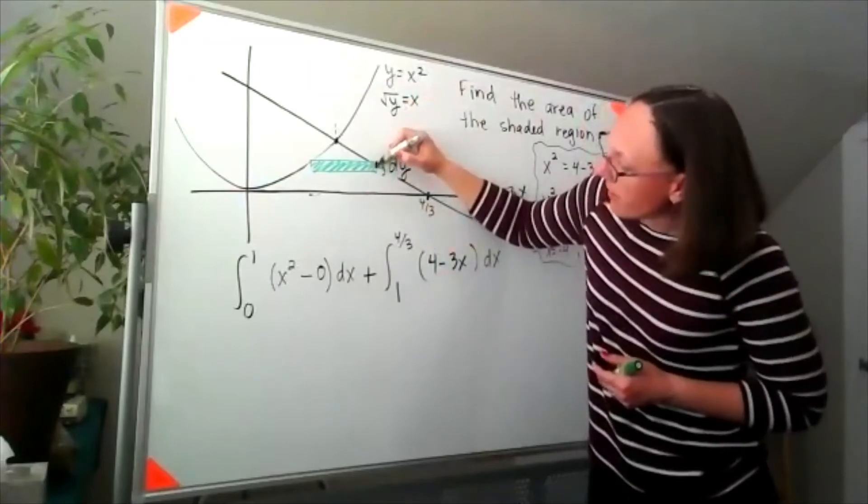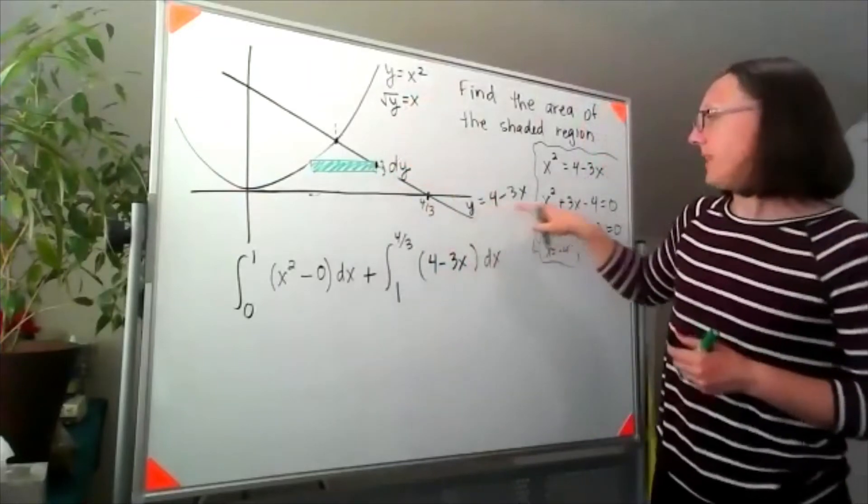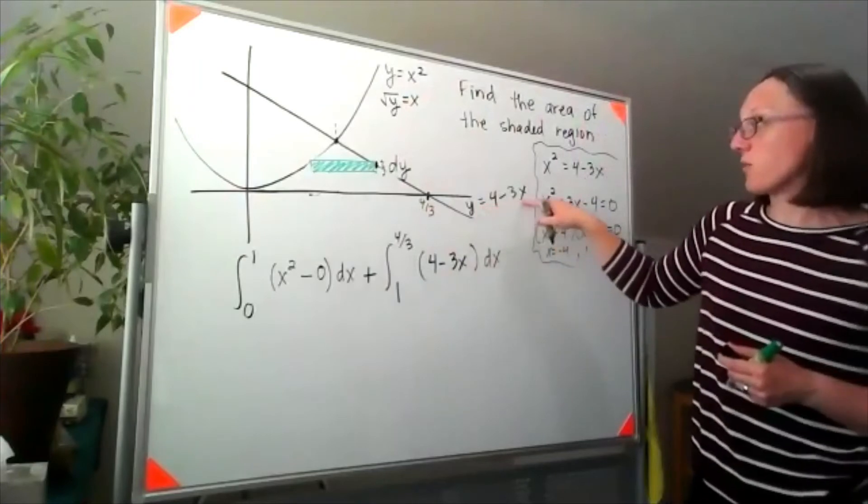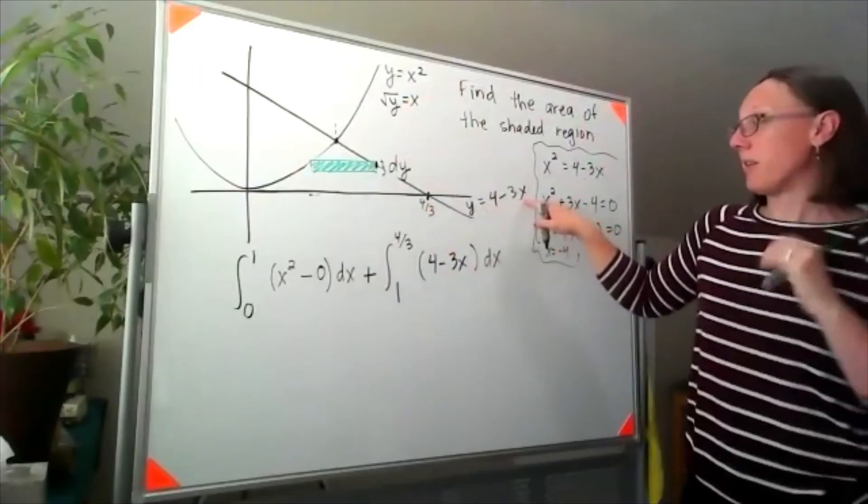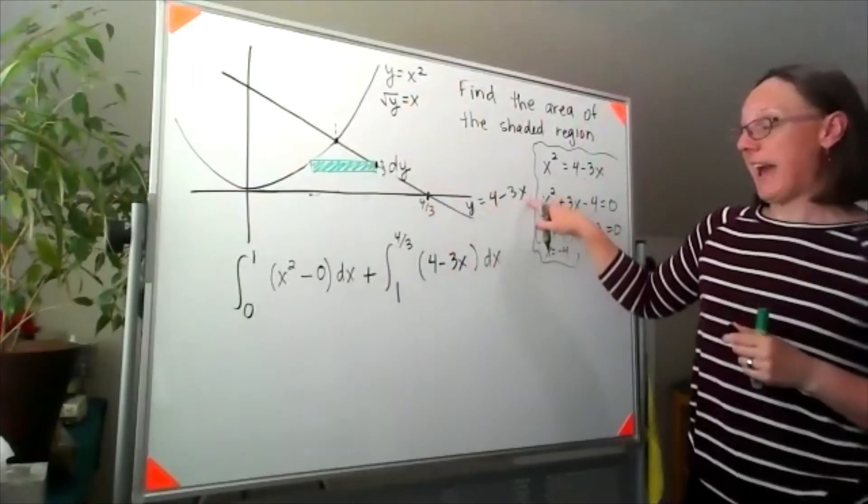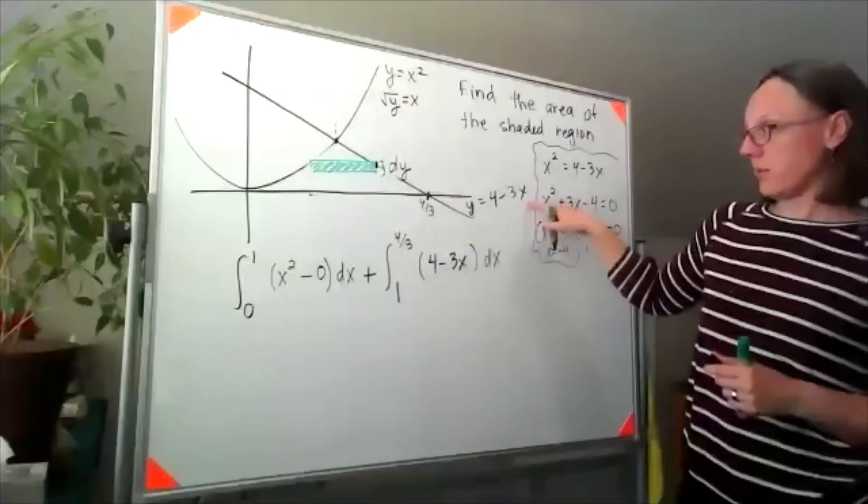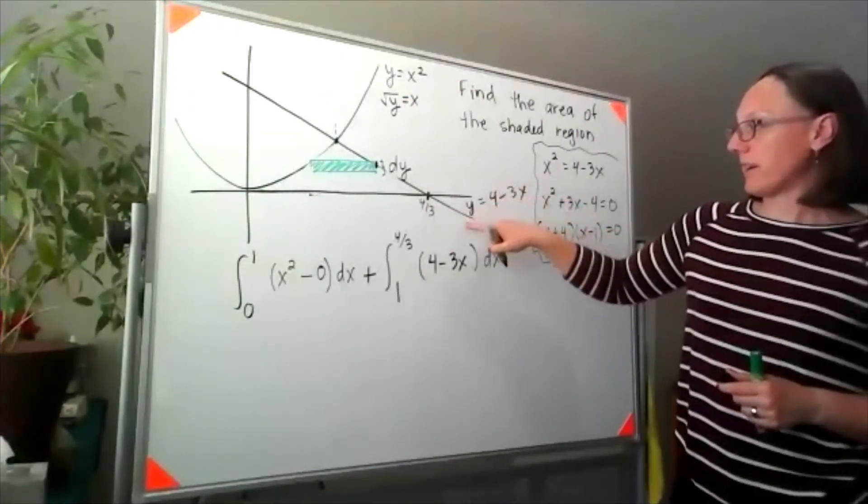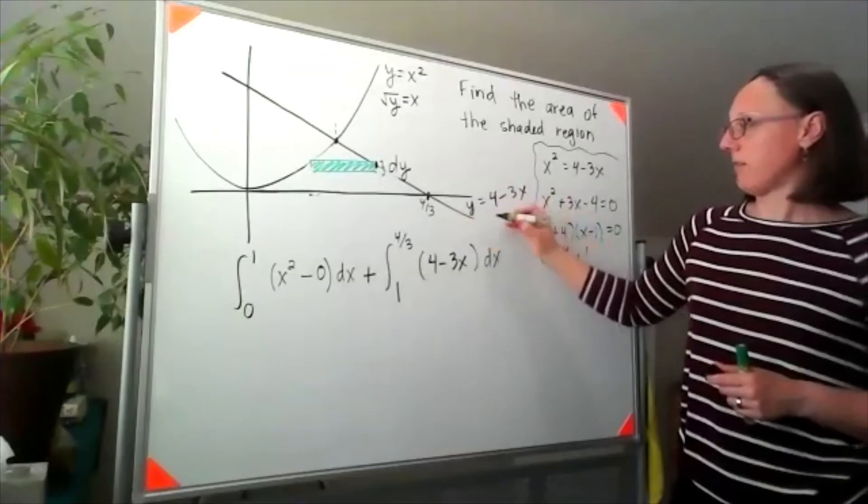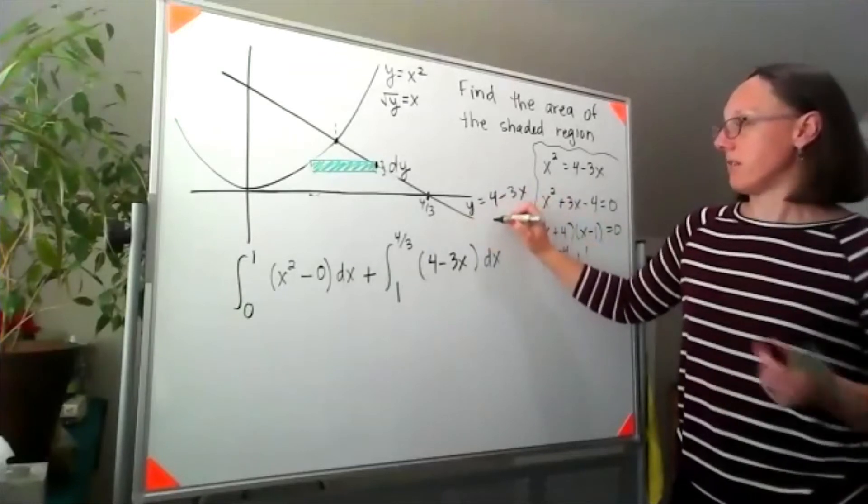Finding the x value on the right hand side of our curve, this equation says y equals 4 minus 3x. But if I rearrange that for x, can I do it in my head, let's see, I'd add the 3x over, I'd subtract the y, and then divide by 3.